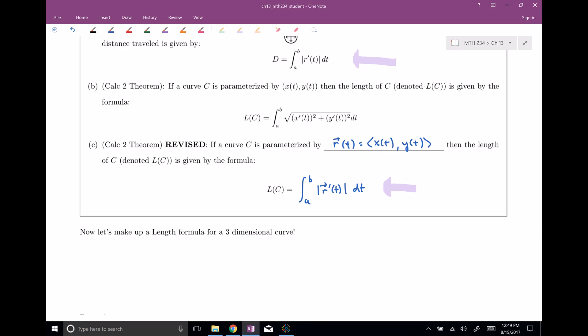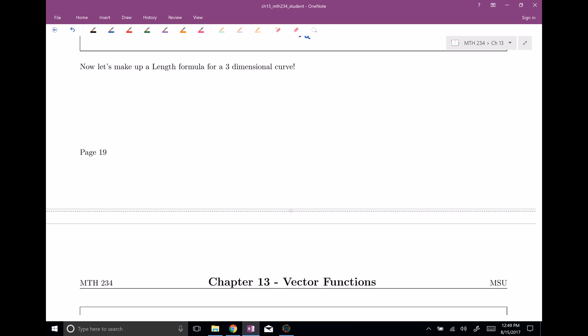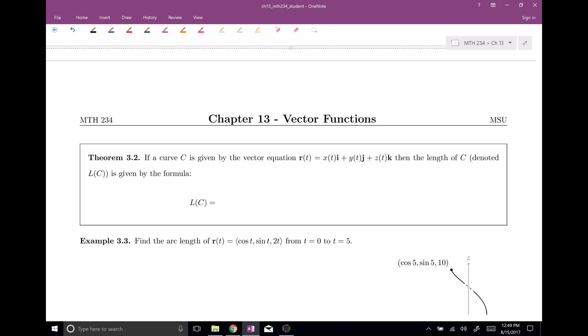Alright, so finally what I'd like to do is, while we have a nice vector formula for arc length in two dimensions, let's go ahead and make one up for three dimensions, right? So the theorem is that if we have a three-dimensional space curve, and let's say it's parametrized, we have an x component, a y component, and a z component, then the length of c, which we're gonna denote again l of c, is given by the formula integral from a to b of the magnitude of the derivative of now, right? This is a three-dimensional vector here, dt.